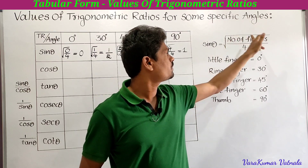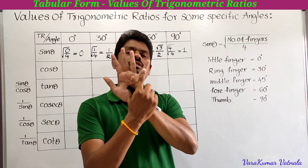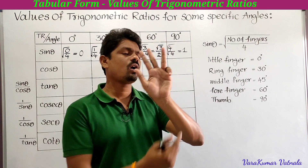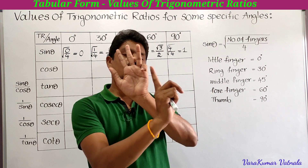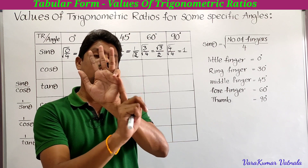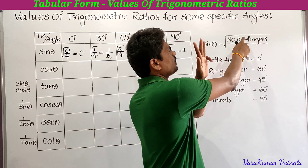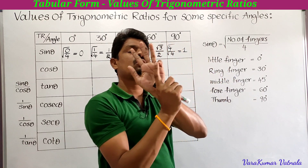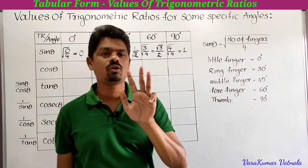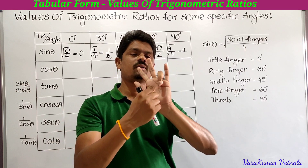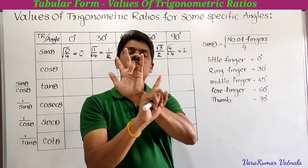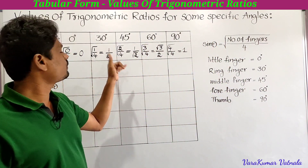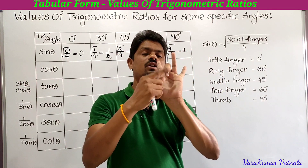For the palm trick: sin θ = square root of (number of fingers on the left side of the folded finger divided by 4). Fold the little finger for 0°: no fingers on the left, so sin 0° = √(0/4) = 0. Fold the ring finger for 30°: 1 finger on the left, so sin 30° = √(1/4) = 1/2. Fold the middle finger for 45°: 2 fingers on the left, so sin 45° = √(2/4) = 1/√2.